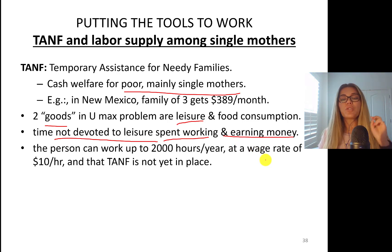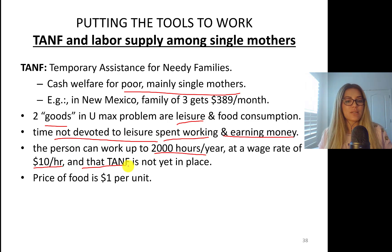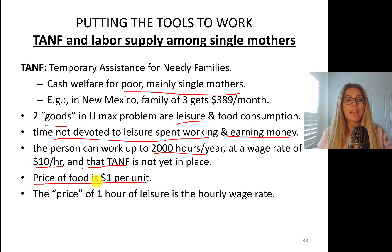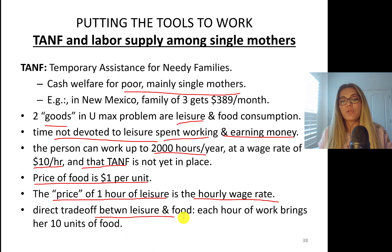So you're working and earning money unless you are enjoying your leisure, enjoying your time with your children. This person can work up to 2,000 hours per year at the wage of $10 per hour. So this person's wage rate is $10. 2,000 times 10, this person can actually make $20,000 per year. And temporary assistance to needy families, I'm going to start calling this TANF, is not yet in place.